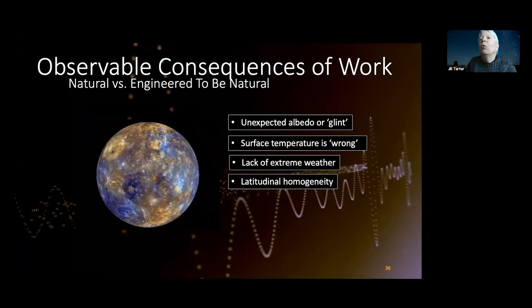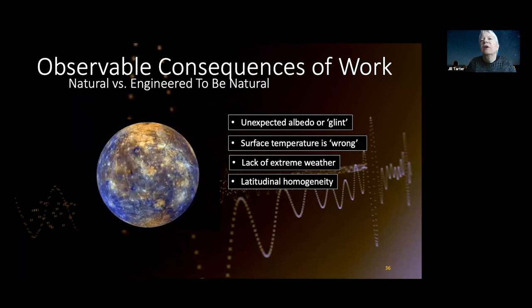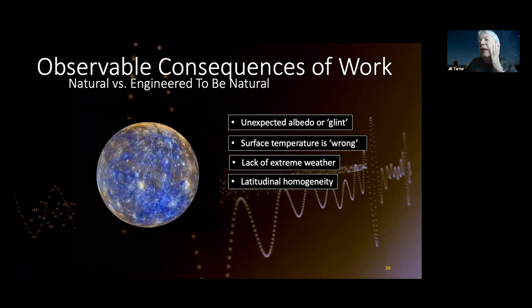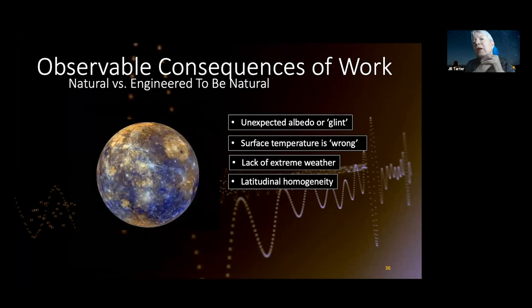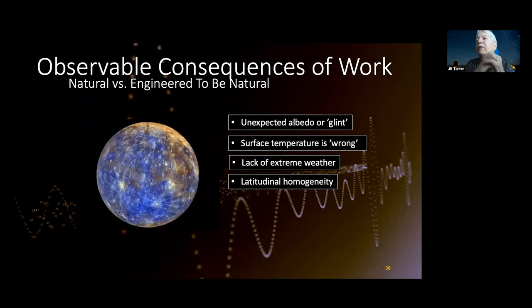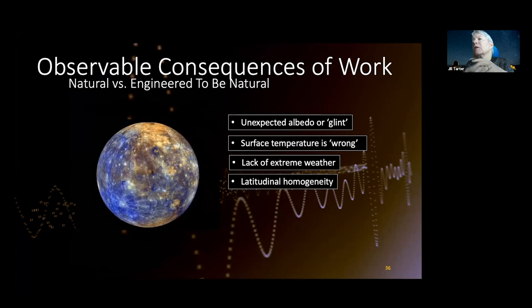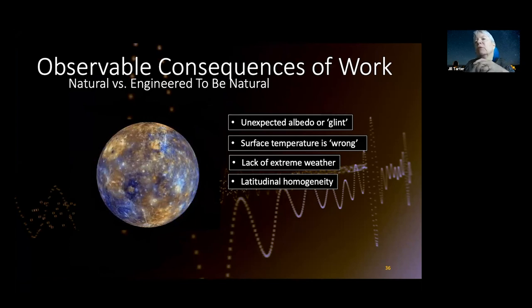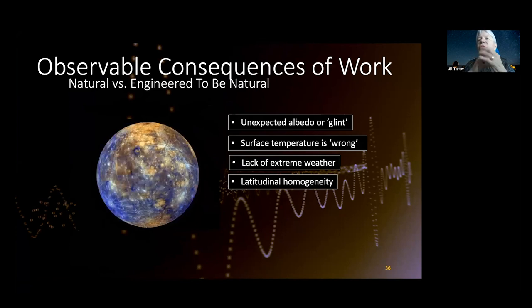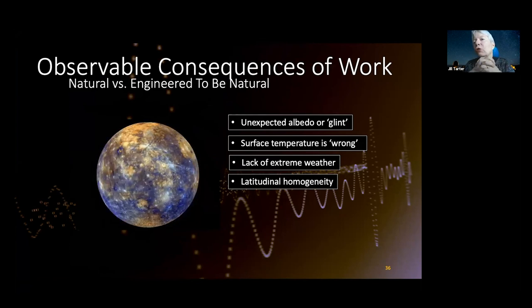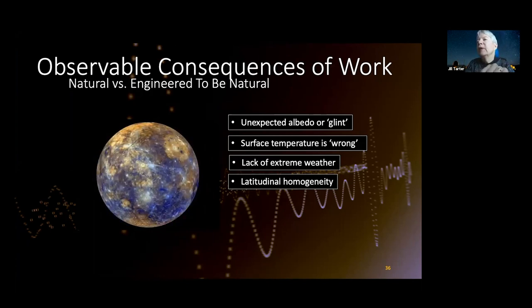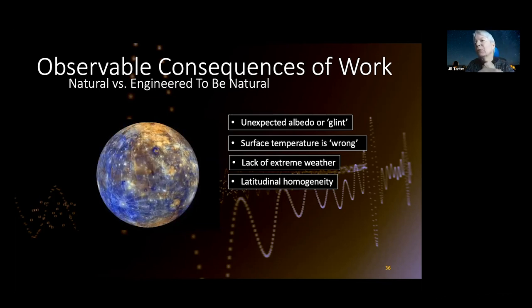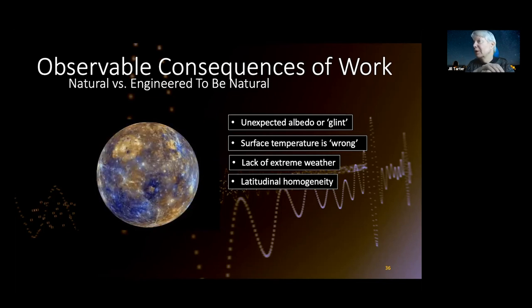Now we think about observational consequences of husbanding a planet — how would we tell a natural versus an engineered exoplanet? It might have an unexpected albedo or glint from orbiting mirrors, it might have a surface temperature wrong for its distance from its host star, it might lack extreme weather because that's more comfortable for advanced life, though I don't know how you would detect that.